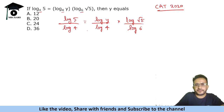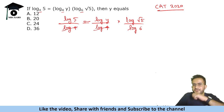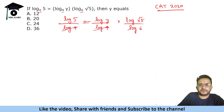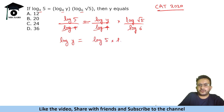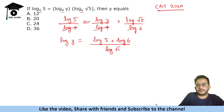We convert: log base 4 of 5 becomes log 5 over log 4. The right-hand side becomes (log y over log 4) times (log √5 over log 6). Since log 4 appears in both the left side and the first factor on the right, and they are in a multiplication arrangement, we can cancel log 4. This gives: log 5 = log y times (log √5 over log 6).